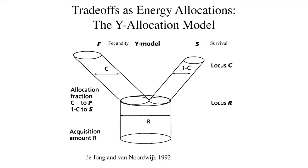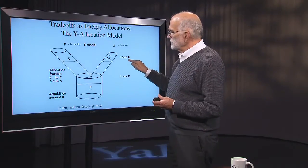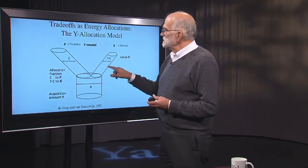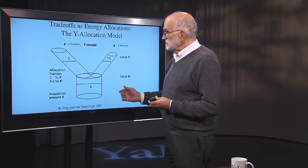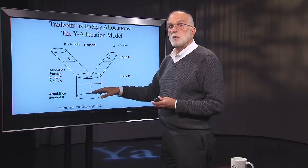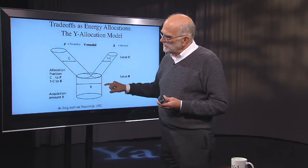Trade-offs have been conceived of in a number of different ways. If we think of them as physiological allocations — where you can take food energy and put it into one trait or another — we get into what is called the Y-allocation model. You can think of a pipe with a diameter representing the total amount of resource coming in, and a certain amount C is given to fecundity, and the remainder, 1 minus C, is given to maintenance leading to survival. C is a locus controlling the allocation of energy into two functions, while another locus governs efficiency at acquiring — foraging or feeding efficiency — which determines the diameter of that pipe. This idea came from Herdin de Jong and Ari van Nordwijk.